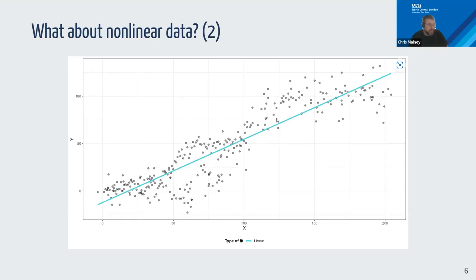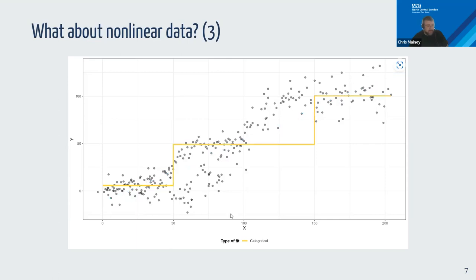One common approach is to chunk data into categories — for example, 50 or less, 51–100, over 150. What you're actually fitting is the mean within each group. In this case that's not a bad estimate, but it's blunt — really over-predicting in some areas and under-predicting in others.